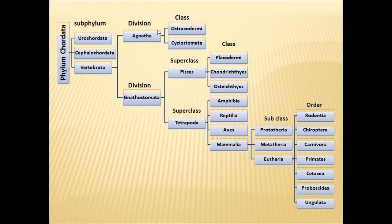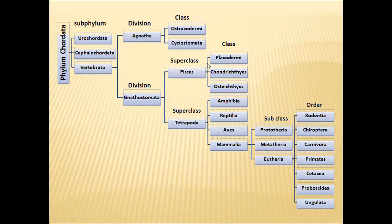Agnathans are jawless fishes, classified into two superclasses. Gnathostomata are jawed fishes, also classified into two superclasses: Pisces and Tetrapoda. In Pisces, extinct fishes are classified into two classes — Placodermi and Acanthodi — and two extant or living groups are present. In today's class, we are going to discuss about Acanthodi, the extinct fishes.